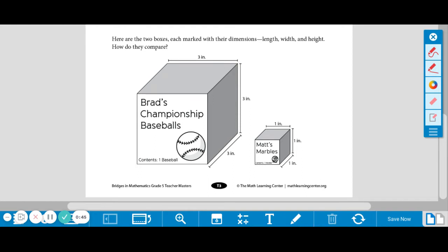So Matt's cube is one for each length. Brad's is three for each length. So if we find the volume of Brad's baseball boxes, three times three times three, right? Three times three is nine, and nine times three is 27 inches cubed.